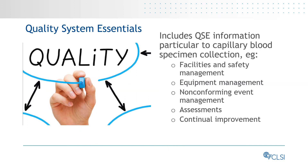A quality management system is the best way for laboratory operations to fulfill quality requirements and objectives. The QMS can be divided into 12 QSEs, which are foundational building blocks that function effectively to support the laboratory's path of workflow. All laboratory personnel should know, understand, and be able to describe the QSE activities that pertain to their job responsibilities, and apply them as required to operate within the standard of care. An overview of the QSEs pertaining to the collection of blood specimens by capillary puncture is presented in this version of GP42.